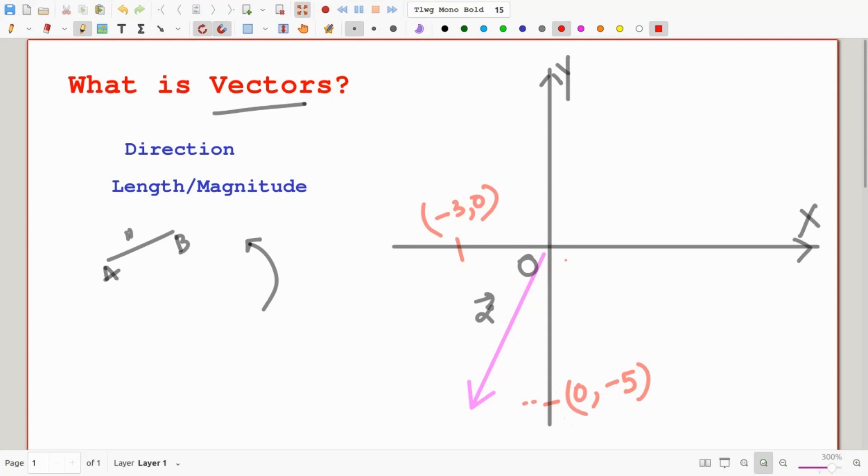Well, now I can say that this vector is equal to its components. So that's a new word for us right now. So it's equal to its x component, which is -3, how much it moves over in x direction, and its y component, which is -5, which is how much it moves down.